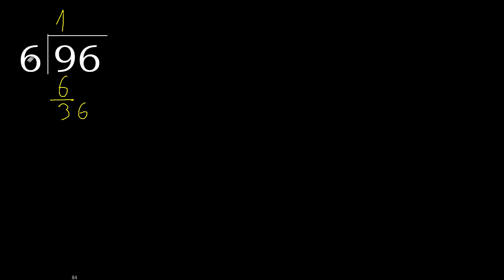36. 6 multiplied by 7 is greater. Multiply by 6: 36. Ok, it is not greater — exact. 36 minus 36 is 0.